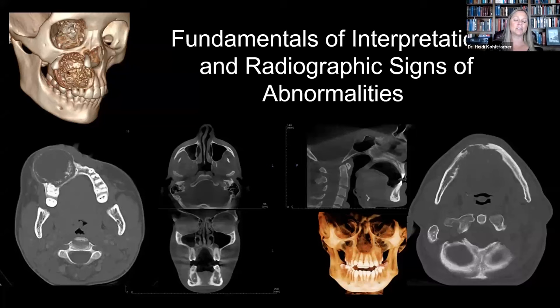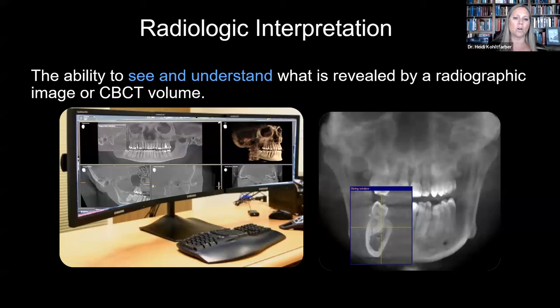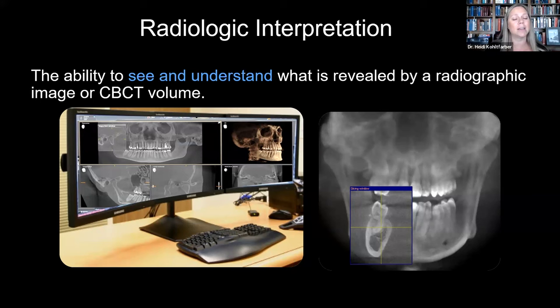Just some quick things. I know there are other lectures where we've talked about fundamentals of interpretation, but I wanted to quickly review some of our principles. Radiologic interpretation is the ability to see and understand what is revealed by a radiographic image or CBCT volume. Based on research, there is a learning curve to that. It usually takes a couple of years to really hone in your skills and know exactly what you're seeing with all those gray values. So if you're struggling a little bit in the beginning, it's completely normal.